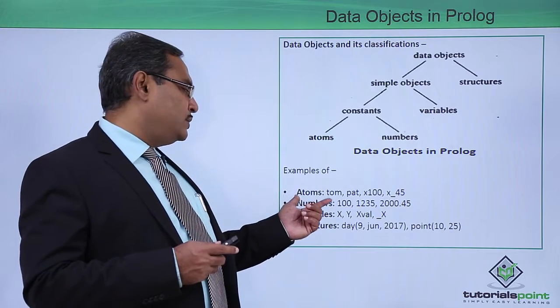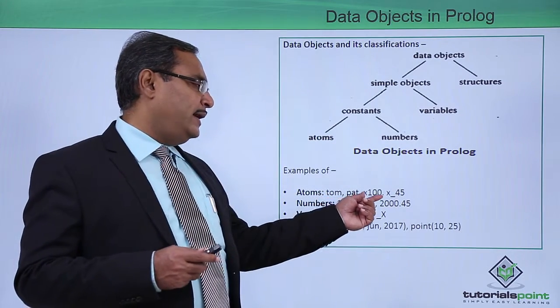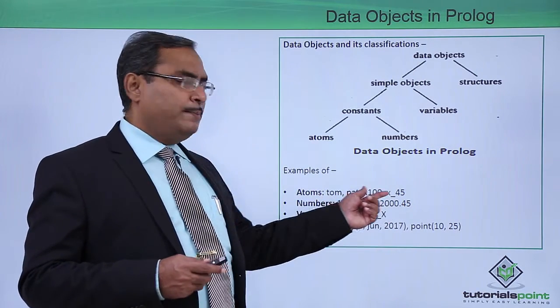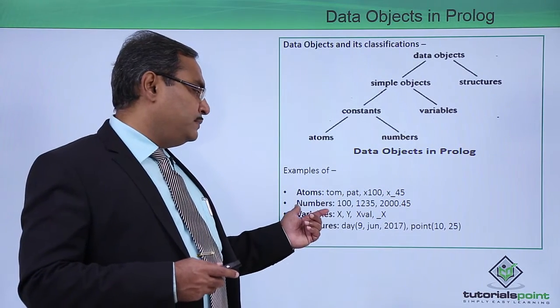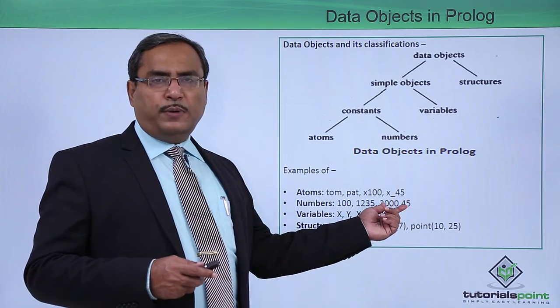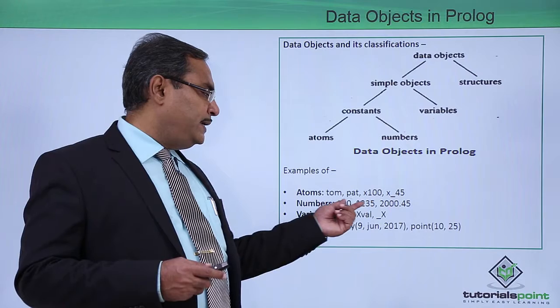Examples: Atoms - tom, pat, x100, x_45 are good examples of atoms. Numbers - 100, 1235, 2000.05. This is the real number. These are the integer numbers.